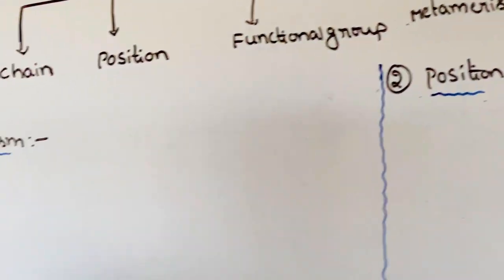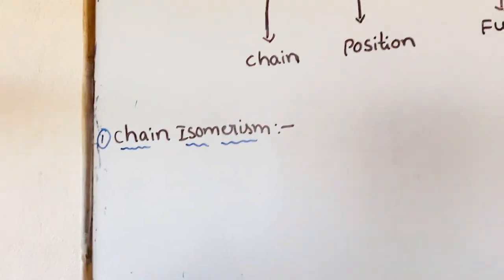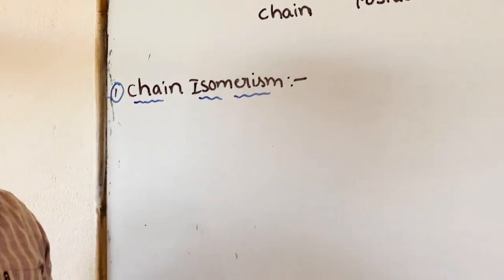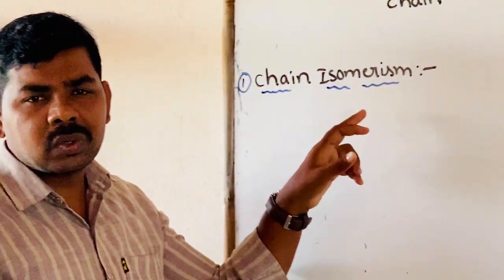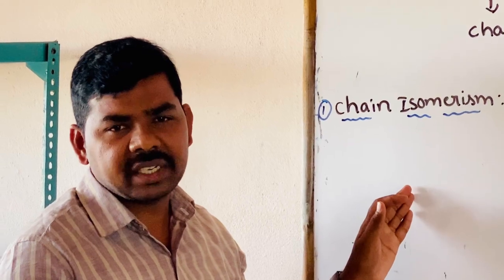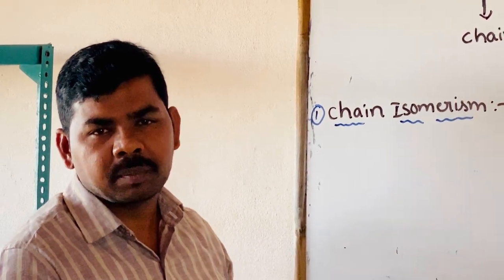Chain isomerism. What is chain isomerism? Molecular formula is same for two or more compounds but different carbon chains — this is called chain isomerism.